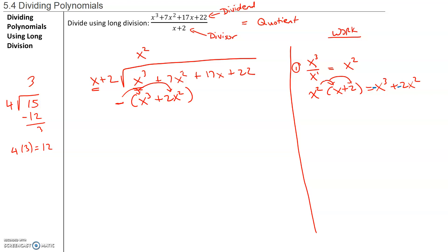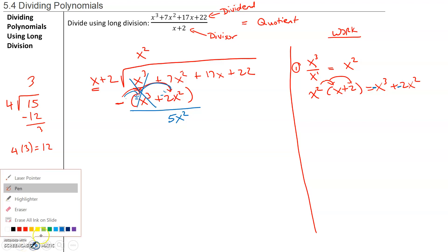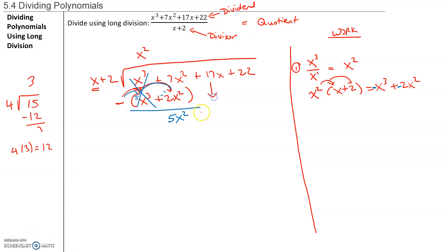So I'm going to distribute that negative — it becomes negative x cubed and negative 2x squared. x cubed minus x cubed gives you 0, so those two undo each other. And 7x squared minus 2x squared gives you 5x squared. Now we're going to bring down the next term, which is 17x. So now we have 5x squared plus 17x.